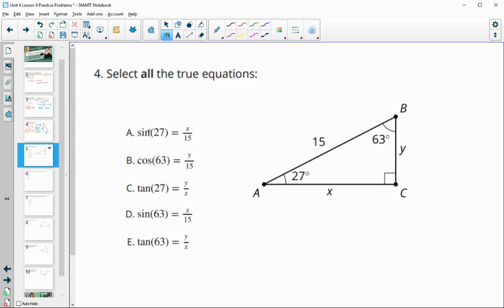Number four, select all of the true equations. So A says the sine of 27. And remember, sine is the opposite side Y over the hypotenuse 15. So this one is the adjacent side, which would be Y in this case, over the hypotenuse, which would be 15. So Y over 15 is good.